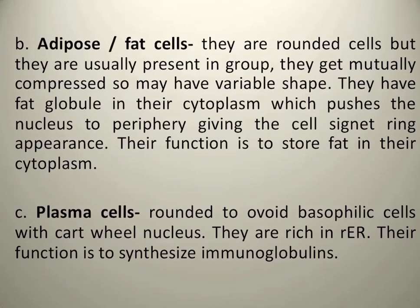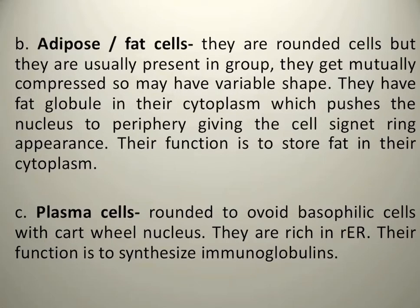What are adipose cells? Adipose cells, also called fat cells, store fat inside them — that's why they are called fat cells. They are rounded in shape but usually present in groups, with high variability in shape. Fat globules are present in their cytoplasm, so their function is to store fat. Because of the fat present inside, the nucleus is pushed towards the periphery, as we will see in the next slide.